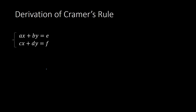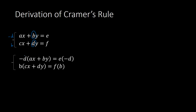Now we've solved for Y with these two general equations, and we're going to solve for X using the same type of logic. To solve for X, I need to get the Y's to cancel. So I'll multiply both equations by something so that when I add the two equations, the Y's cancel. I'll multiply the top equation by negative D and the bottom equation by positive B, so that the negative and positive will cancel when added. Distributing negative D and B to the parentheses, I have negative ADX and negative BDY equals negative DE for the first equation.